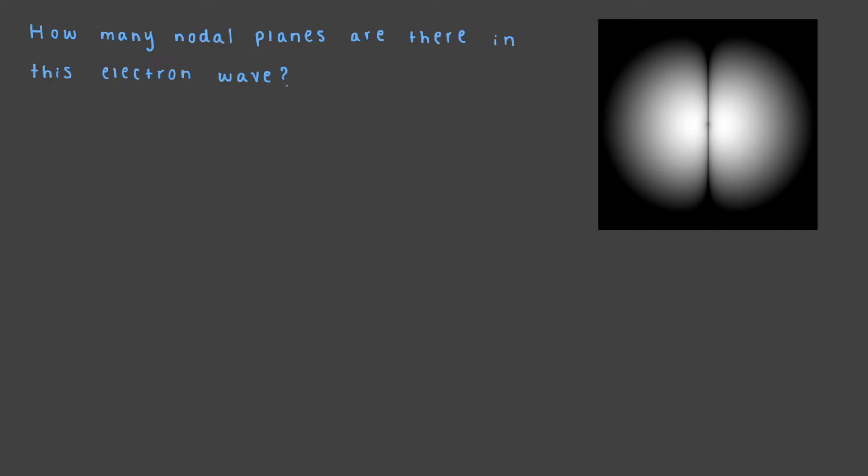How many nodal planes are there in this electron wave? That's right! This line going down the middle of our electron is a line where there is no probability density. That line is our one nodal plane.